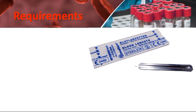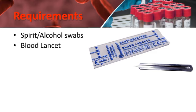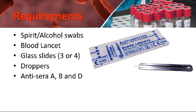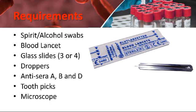Now, what are the requirements for this practical? You will need spirit or alcohol swabs, and a blood lancet — a fine, sharply pointed needle used to prick the skin. Next you will need glass slides, droppers, and antiserum A, B, and D. Antiserum A is obtained from group B people and antiserum B is obtained from group A people. You will also need toothpicks and a microscope.